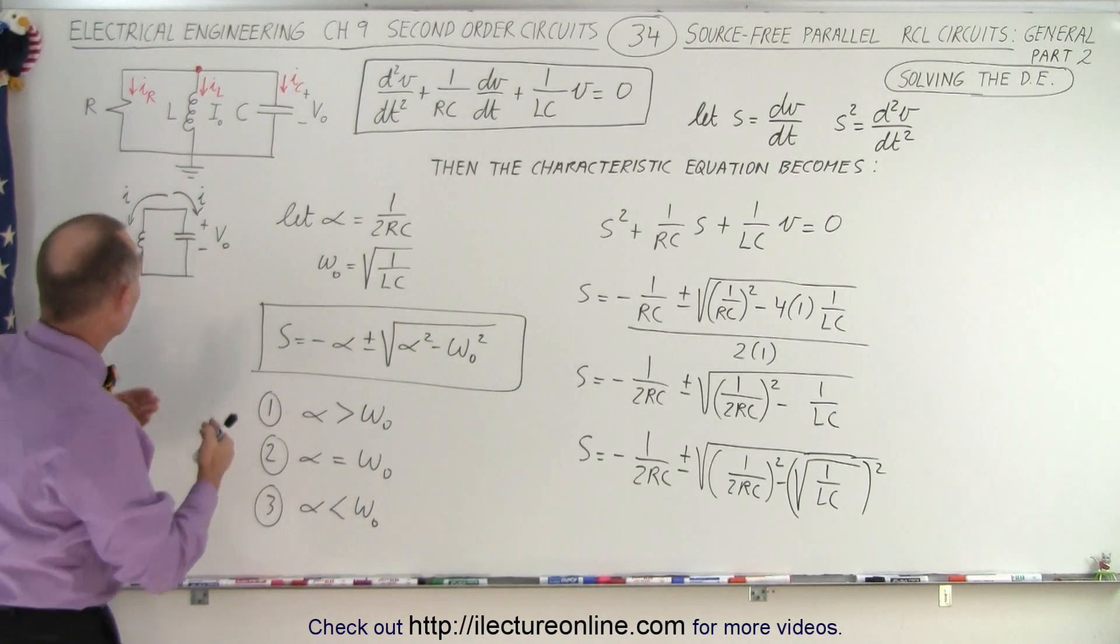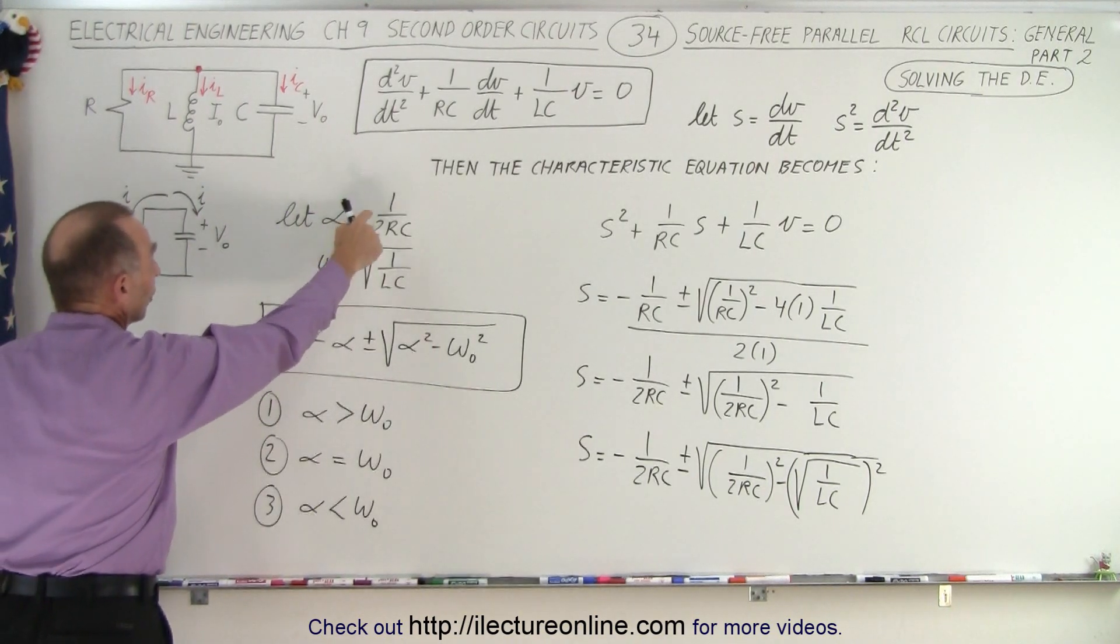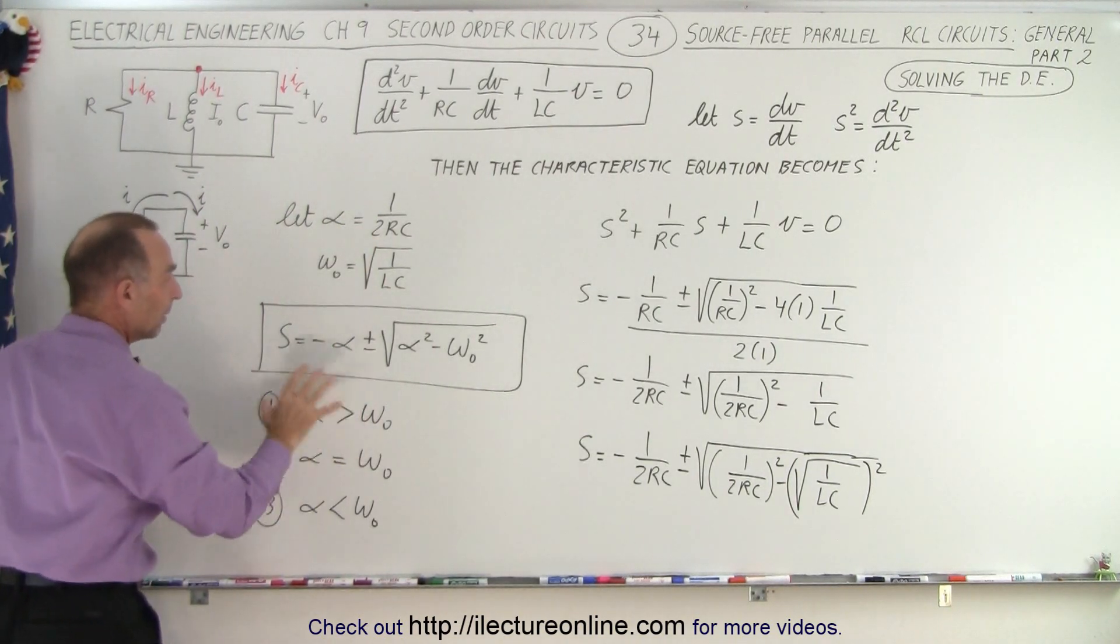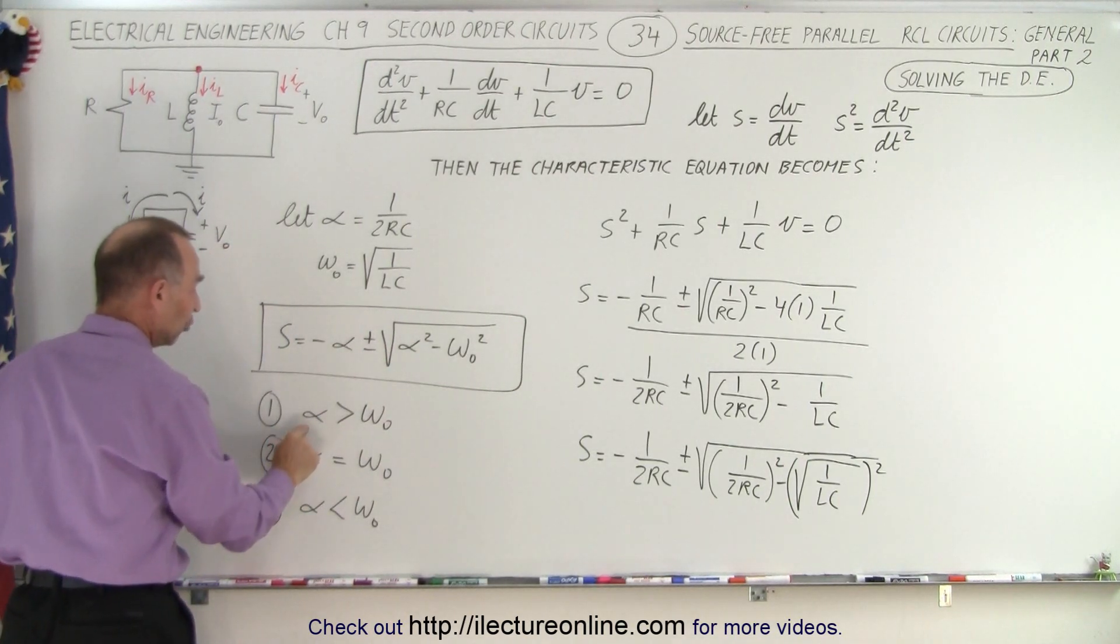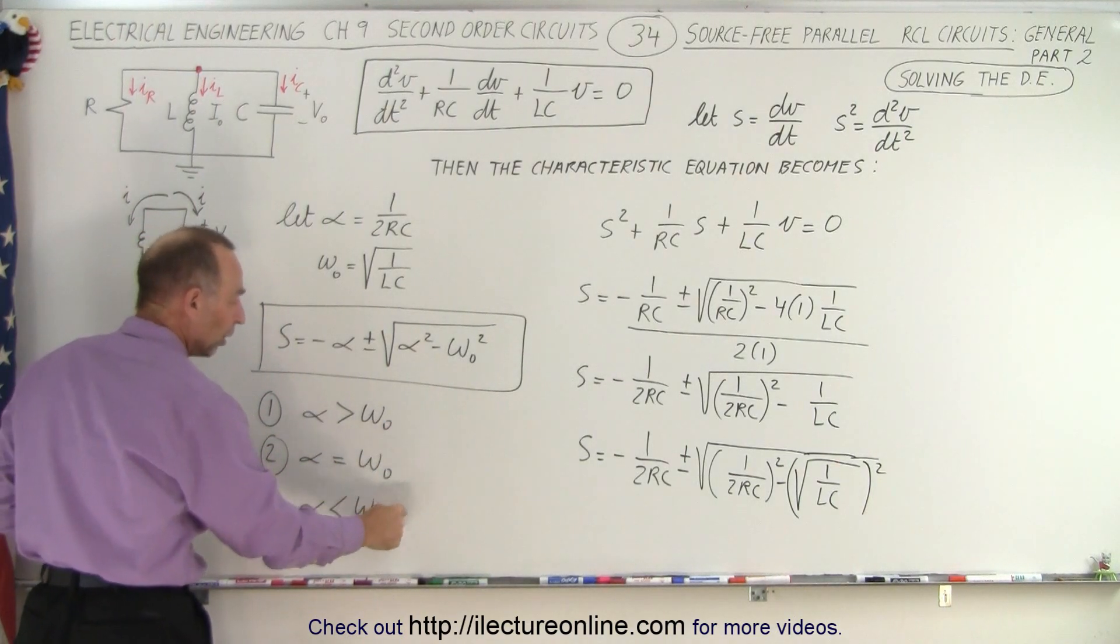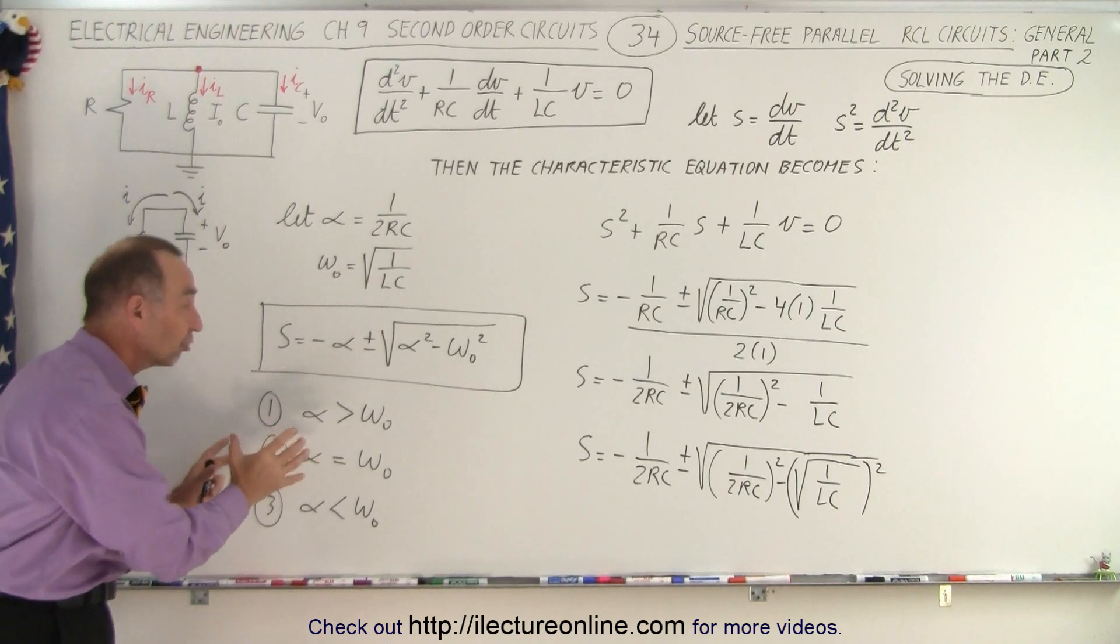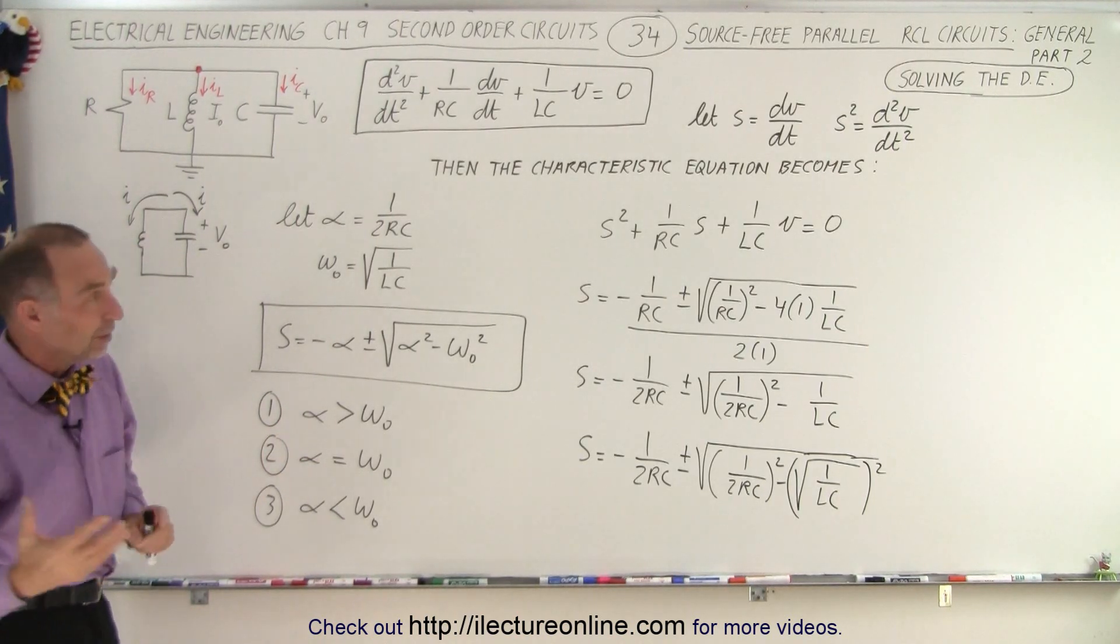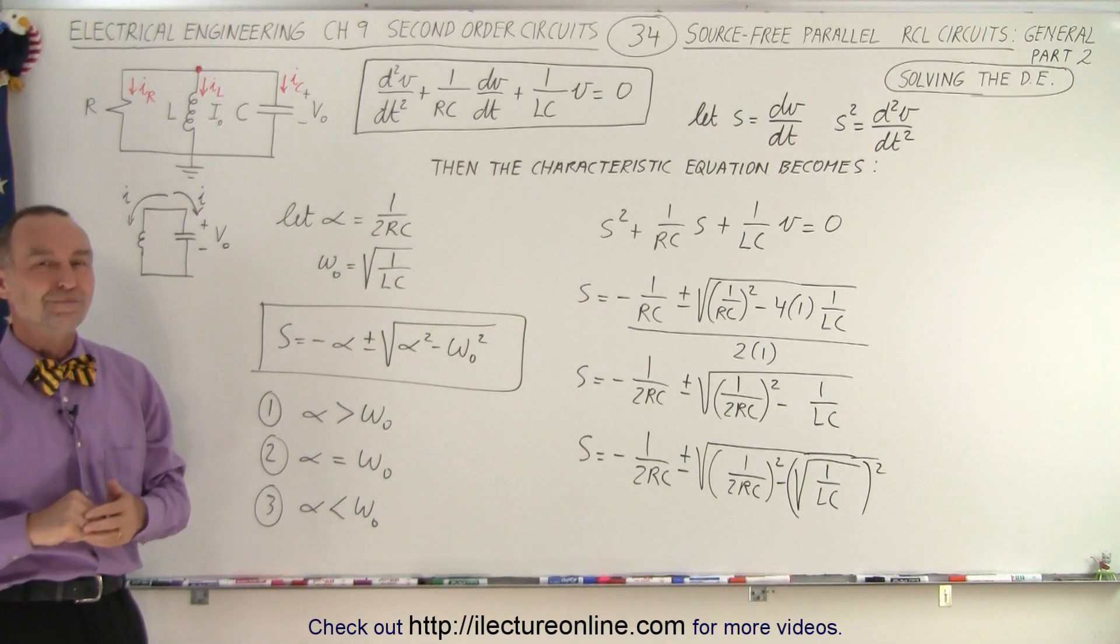Of course, with the resistor, there's going to be a dampening effect, and so we have an alpha, which is 1 over 2RC. Then, depending upon the relationship between alpha and omega sub 0, we'll have a situation where we have over-dampening, critical dampening, or under-dampening. We're going to show you how to calculate those specific solutions with boundary conditions in the next videos to come. So stay tuned, and we'll show you how to do that as well.